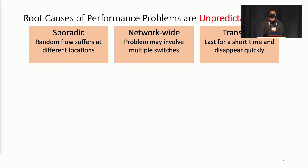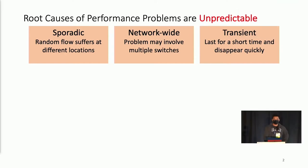Our first observation is that the root causes of performance problems are unpredictable. The reason is that those problems may happen to a random flow at random places, and a single problem may involve multiple switches across the network. Lastly, those problems may also last only for short time and then disappear very quickly.